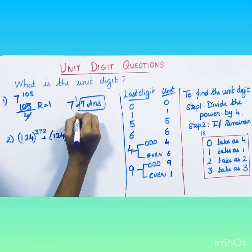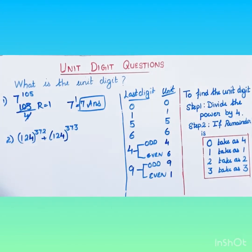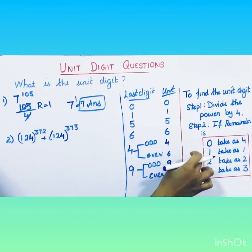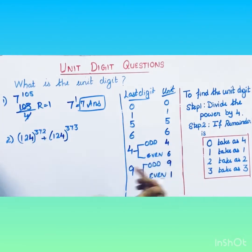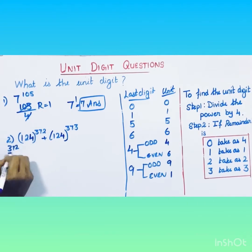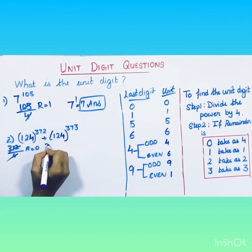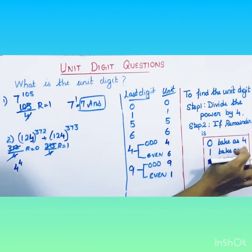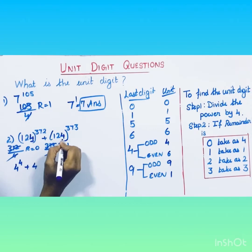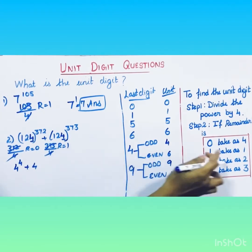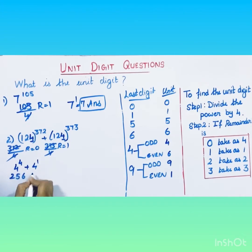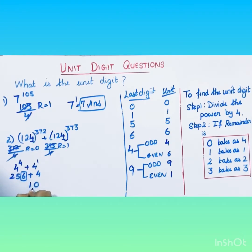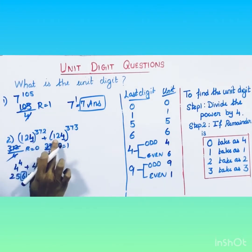In the next example, follow the same steps: take the power and divide it by four and check the remainder. For the first term the remainder is zero, and for 373 divided by four the remainder is one. Take the unit digit of the base, which is four. Remainder zero means take it as four (unit digit 6 since 4^4 = 256), and remainder one means take it as one (4^1 = 4). So we get unit digits six and four.